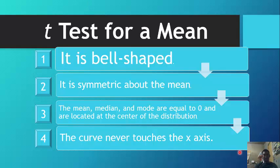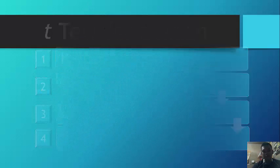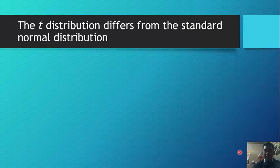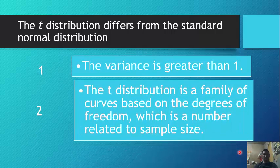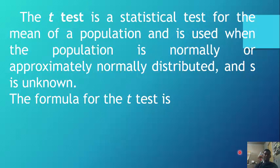This is the similarity between the t-test for the mean and the normal distribution curve. The t-distribution differs from the standard normal distribution in that the variance is greater than one. The t-distribution is a family of curves based on the degrees of freedom, which is the number related to the sample size. The t-test is a statistical test for the mean of a population and is used when the population is normally or approximately normally distributed.